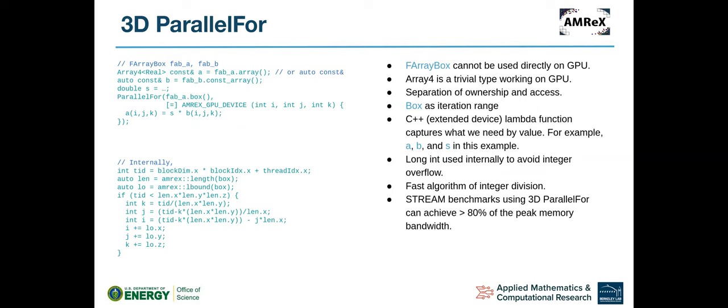And if it's a 3D parallel for, the implementation is kind of similar to the 1D parallel for. And in this case, I show you we have two fab boxes. And I mentioned earlier, the fab box cannot use it directly on GPU. So we create something called array4. So this thing is a simple type. And then these two, a and B, you can use it directly on GPU. So this parallel for is very similar to the 1D version. And here, this is the box and it's a three. So they tell you what's the 3D loops index range. And internally, what we actually have to do is we compute the thread ID and figure out what's the 3D index IJK is.